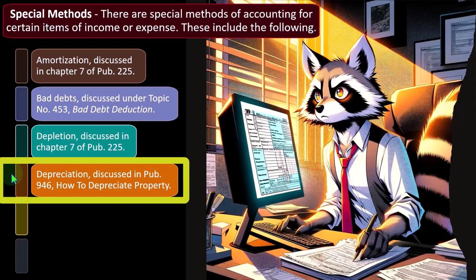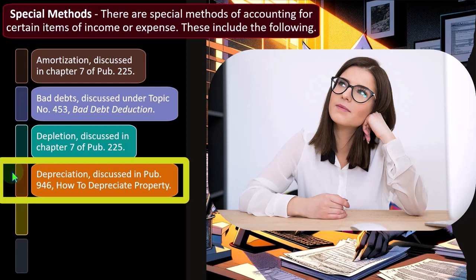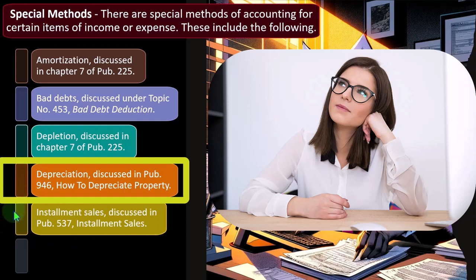Depreciation typically affects more small businesses if you buy larger pieces of equipment. It causes all kinds of problems because it's more complicated than simply a cash-based system — we have to track all the records. It really becomes a problem when we dispose of or sell property, because then we have to deal with adjusted costs, the fact that we depreciated part of it, and whether there are differences in tax rates for capital gains versus ordinary income. So even for small businesses, it's an area of complication.